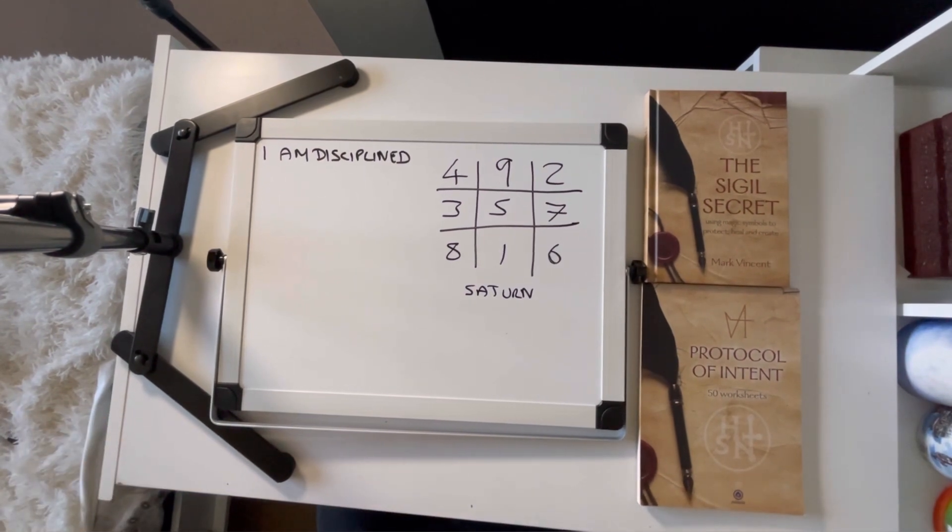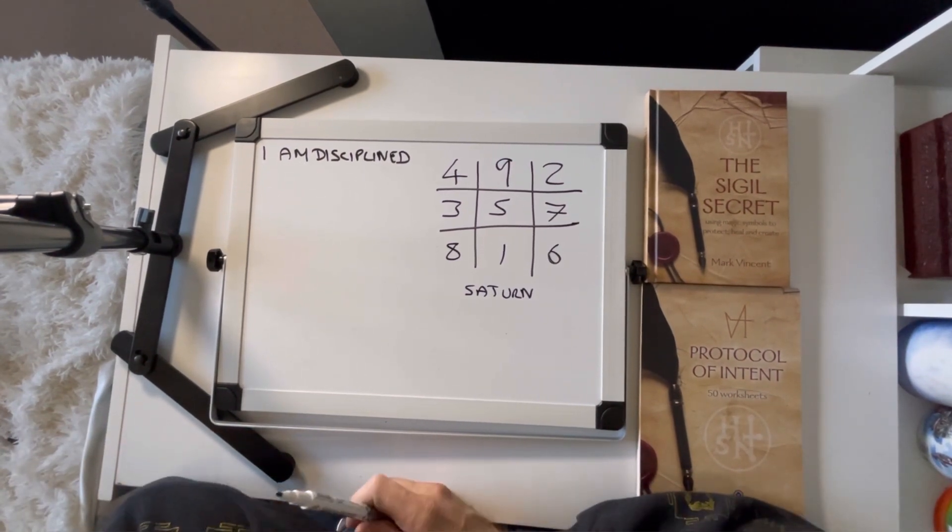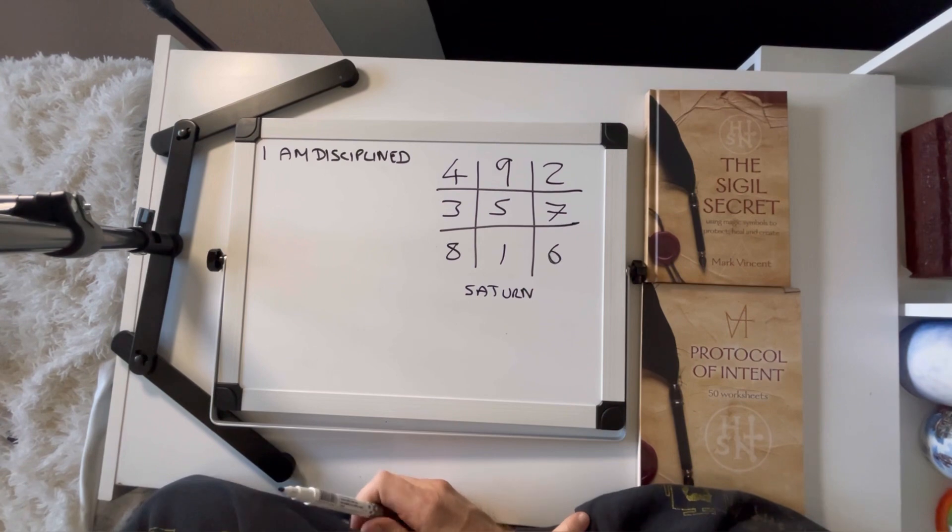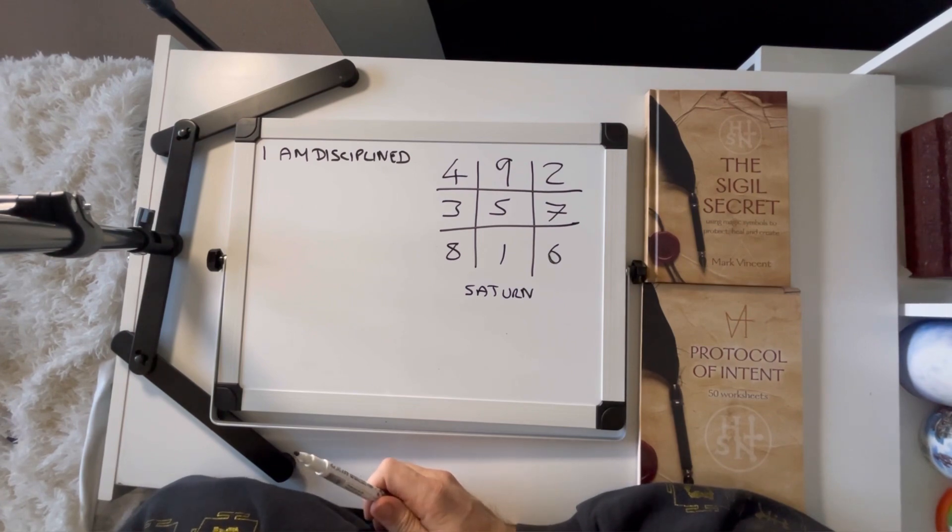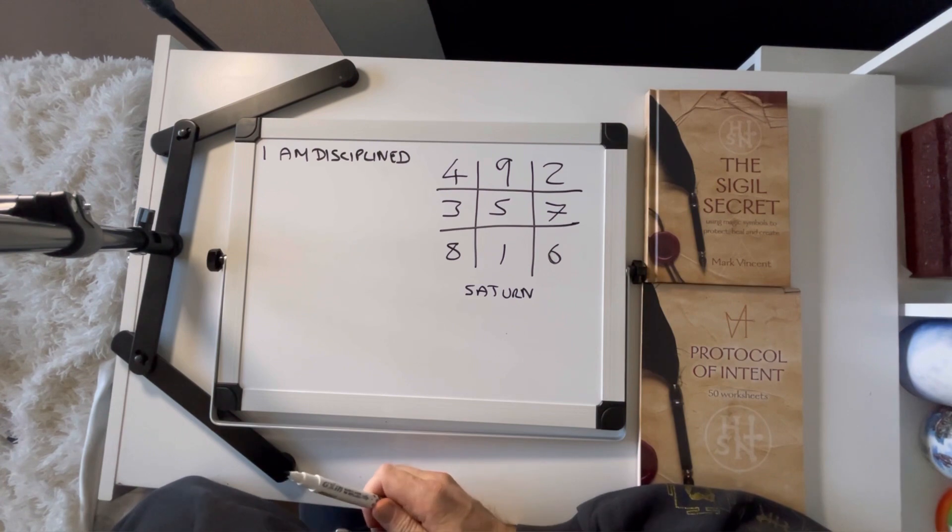Hi there, welcome to another episode of the Chaos Chamber and to Sigil of the Week. This week I'm going to do something a little different for you. I thought it would be fun to show you taking the same Statement of Intent and converting it to an Austin Osman Spare sigil and also a planetary sigil so you can see them side by side.